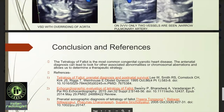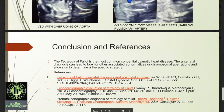Conclusion. TOF is the most common congenital cyanotic heart disease. The antenatal diagnosis can lead to looking for other associated abnormalities or chromosomal aberrations and allow us to determine a therapeutic strategy.